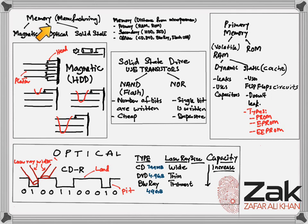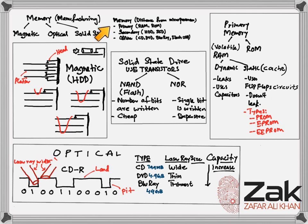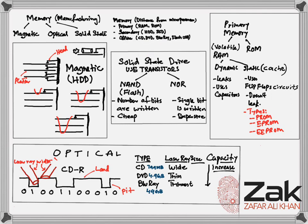We will be looking into storages with respect to their manufacturing terms like magnetic storages, optical, solid-state, and with respect to their location away from the CPU. We have RAM and ROM closest to the CPU, then secondary storage devices — hard disk and SSD — and then offline storage devices that we can remove and take away from the computer, like CD, DVD, Blu-ray and flash drives.